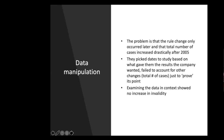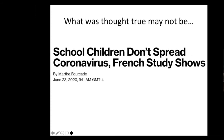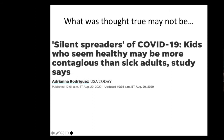The bottom line is: we think science is stable. It's not. We thought kids don't spread COVID — now we know they do. We have to be careful that science will evolve even if we have to make a decision.